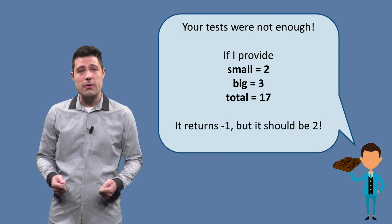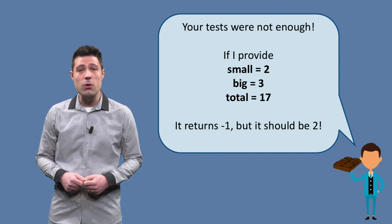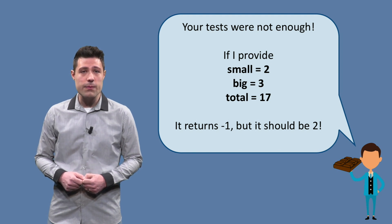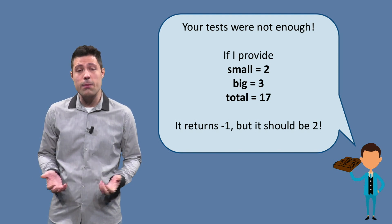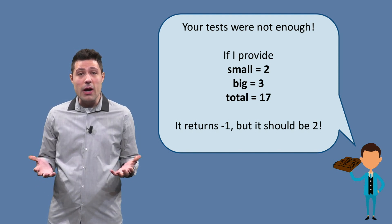If we provide as an input small equals 2, big equals 3, and total equals 17, we expect the output to be 2, as we would need two small bars. But our software returns minus 1, which is a bug.